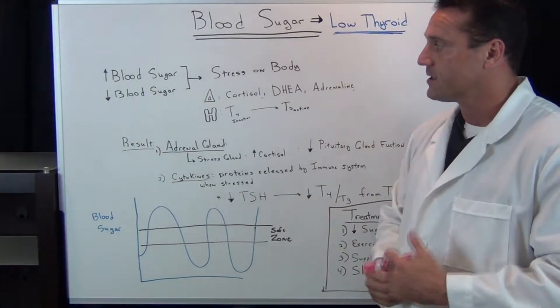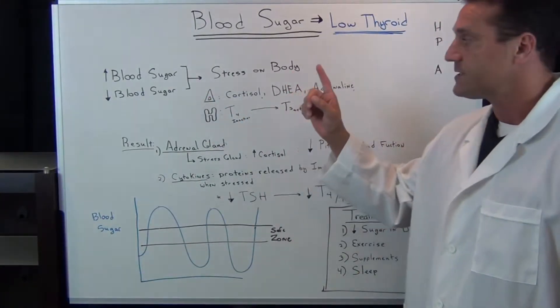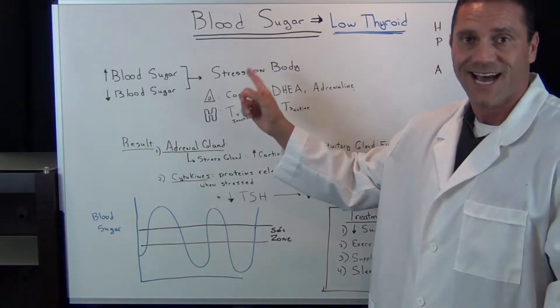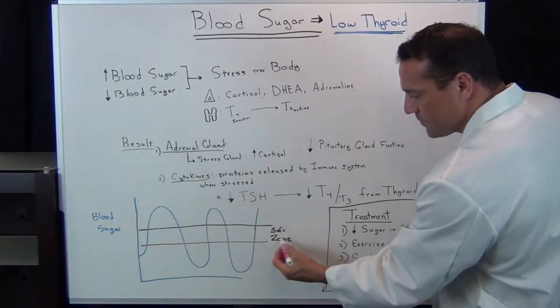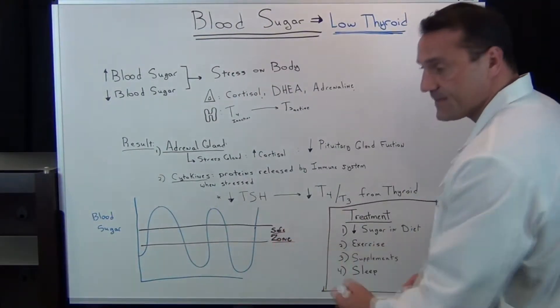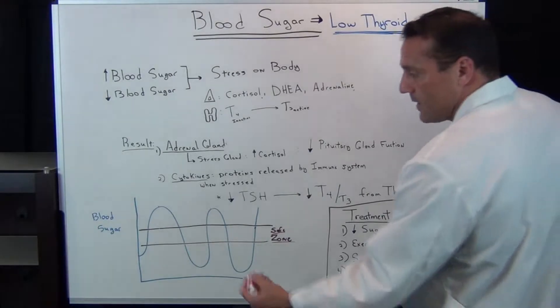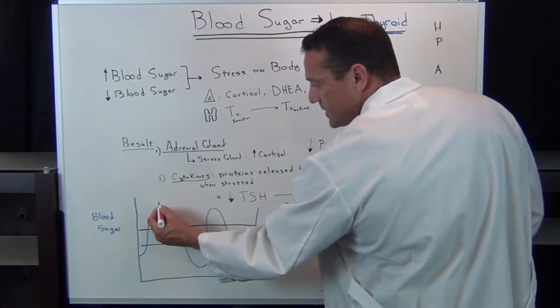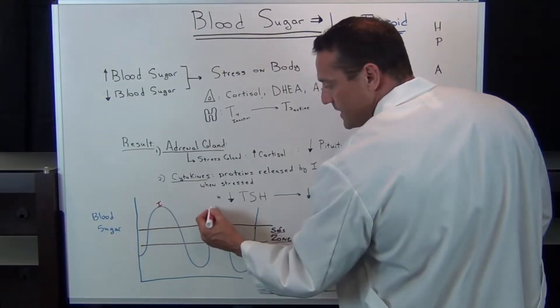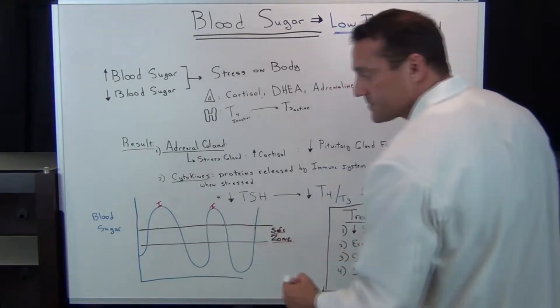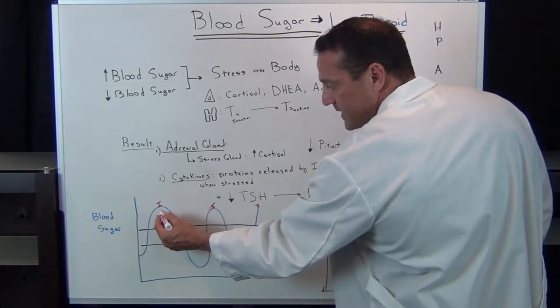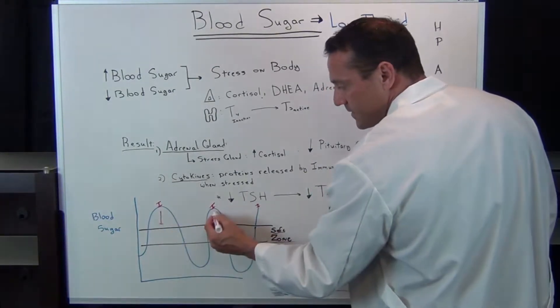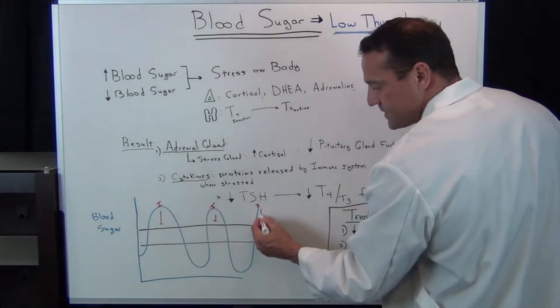Whether you go on high blood sugar or low blood sugar, it stresses the body tremendously. How our blood sugar is regulated, we should be in this safe zone right here. However, if we have increased blood sugar, we release a hormone called insulin. The function of insulin is to bring down the blood sugar, to escort glucose into the cell.